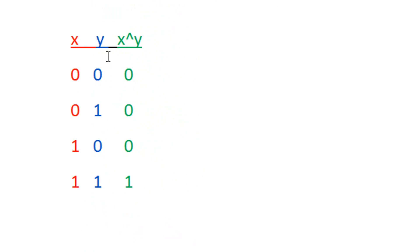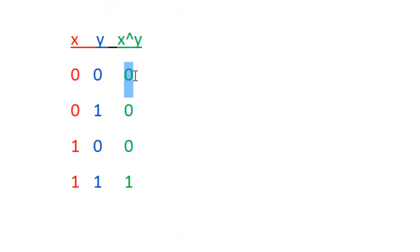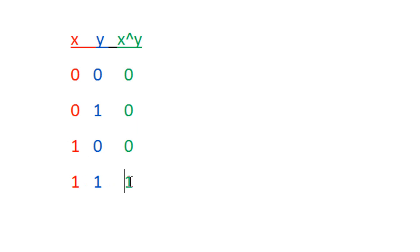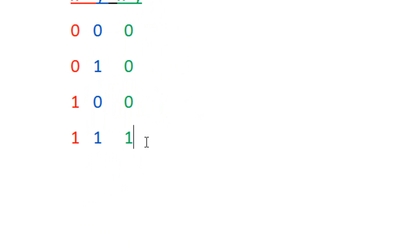The AND operation works by comparing two bits from the source and destination operands. If both bits are 0, the result is 0. If one bit is 0 and one is 1, the result is 0. The only time you get a 1 as a result is when both operands have a 1 bit — two 1s give you a 1, otherwise everything else is 0.